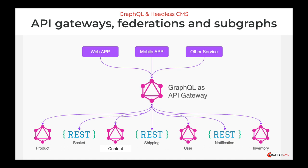Looking at the example here, we can see there's an individual GraphQL graph for products, content, users, and inventory. Each of these is a facade of the implementation technology for the specific system. More importantly, we can see that several clients at the top — web apps, mobile apps, and so on — are each able to access all of this data through a single API endpoint in order to retrieve and operate on the integrated whole.